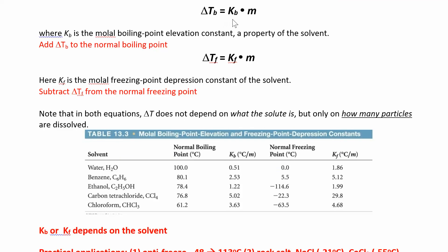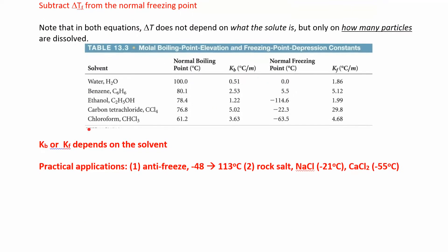Delta Tb equals Kb times m. Kb is a constant which you can find in this table and it depends on the solvent. These are the different solvents. Mostly we're going to deal with water. So Kb for water is 0.51, the Kf for water is 1.86, and the units are degrees C per molal. Molality is the moles of the solute over the kilograms of the solvent. We need to know those definitions in order to find the freezing point and boiling point. They depend on the solvents.